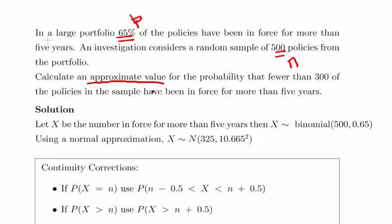Just as a remark, n times p and the variance will both work out to be larger than five, so the normal approximation will hold here. This is X, the number of policies enforced for more than five years—a binomial random variable with n=500 and p=0.65. Using a normal approximation, the binomial mean gives us an equivalent normal mean of 325 and a variance of 10.665².